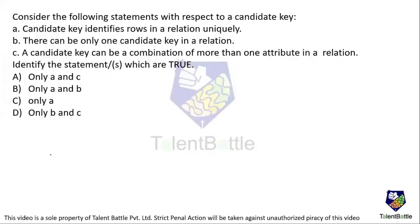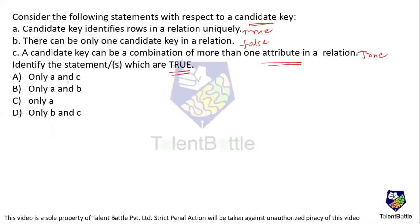Consider the following statements about candidate keys: A — a candidate key identifies rows in a relation uniquely (true); B — there can be only one candidate key in a relation (false, multiple candidate keys are possible); C — a candidate key can be a combination of more than one attribute (true). Statements A and C are true, so option A is the correct answer for this question regarding candidate keys.